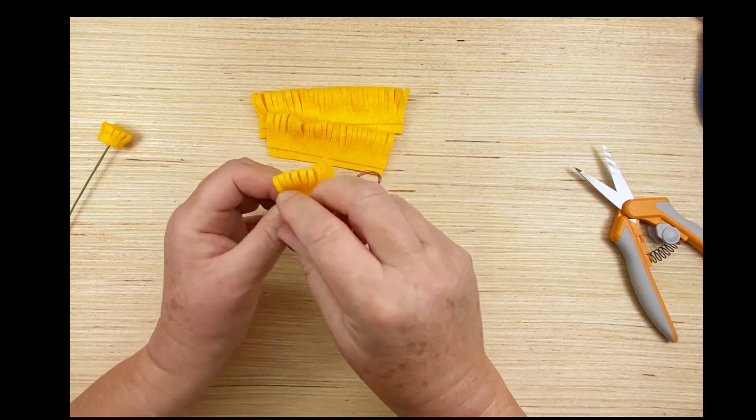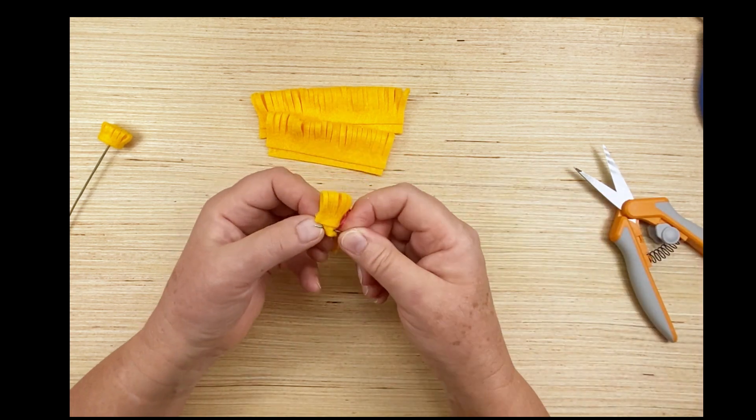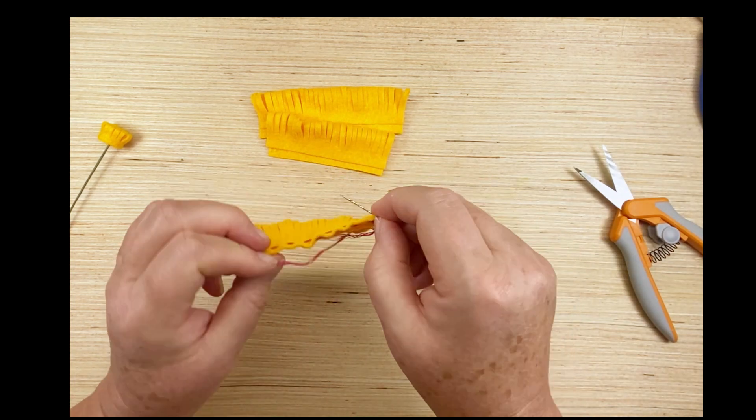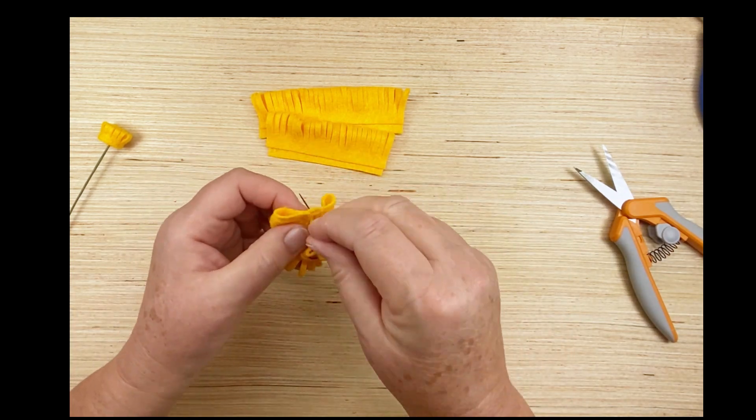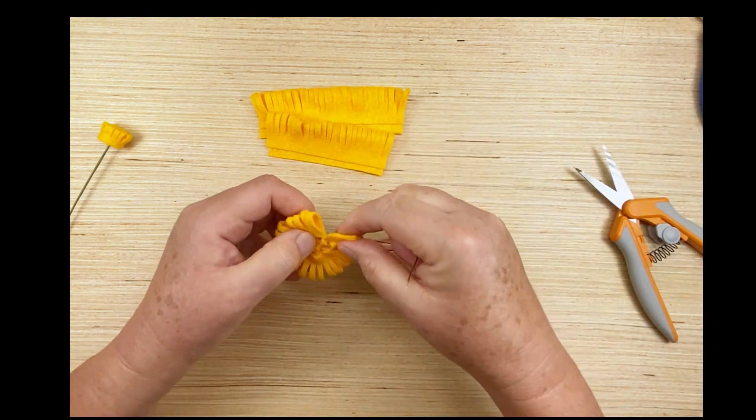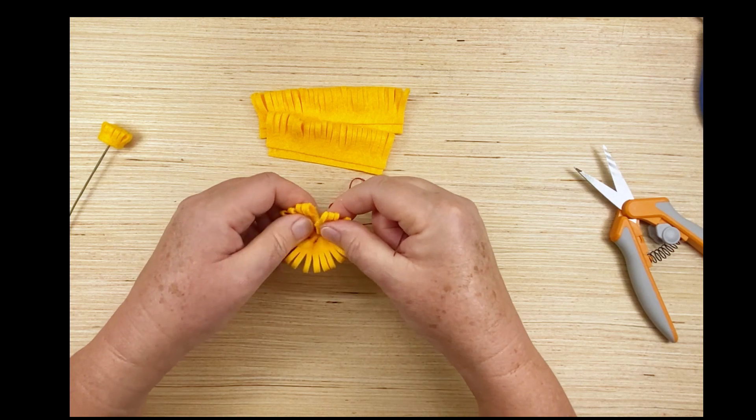Again, the stitching doesn't need to be perfect, nobody's going to see it, nobody's going to know that it's there. And on this final stitch we're going to go down and into that very first stitch that I did. When I pull the thread tight this is going to take that strip into a circle shape.